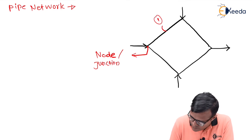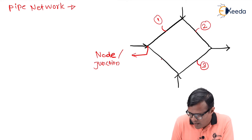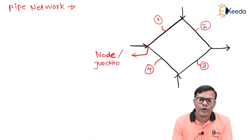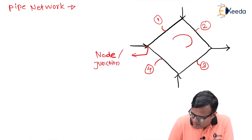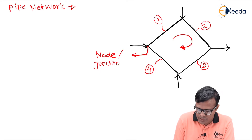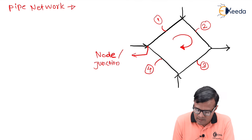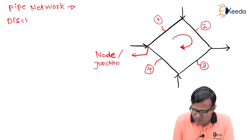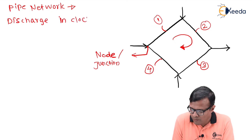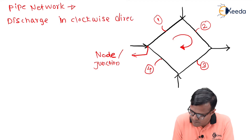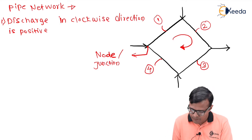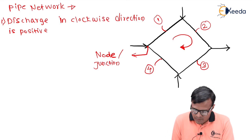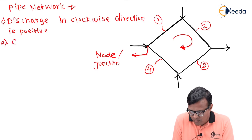This is pipe one, pipe two, pipe three, and pipe four. We don't know the behavior or direction of discharge, so we generally consider the behavior in a clockwise manner. The first assumption is that clockwise discharge is positive. The second thing is that the network is a closed one.